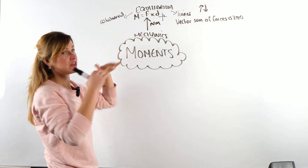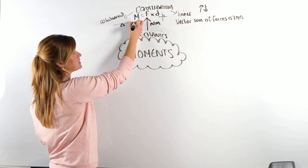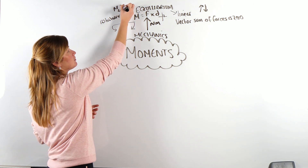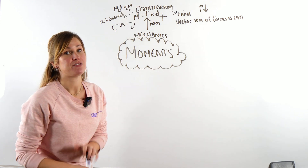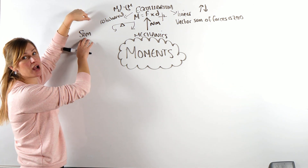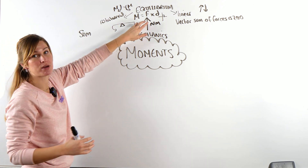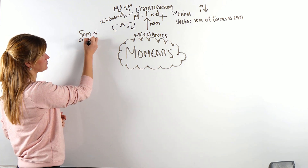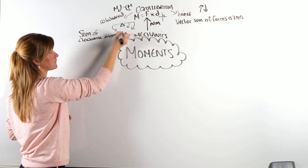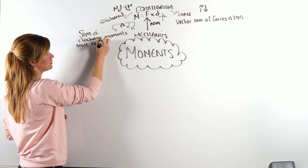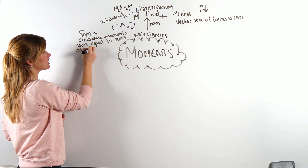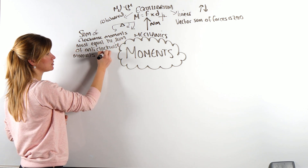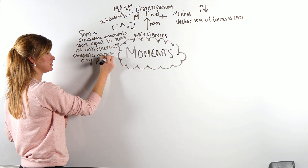Rotational equilibrium — think about a seesaw. It means all the moments in the clockwise direction must equal all the moments in the anticlockwise direction. When you write your definition in the exam, you have to say it's the sum — meaning you're adding up lots of different moments. So: the sum of the clockwise moments must equal the sum of the anticlockwise moments about any point.